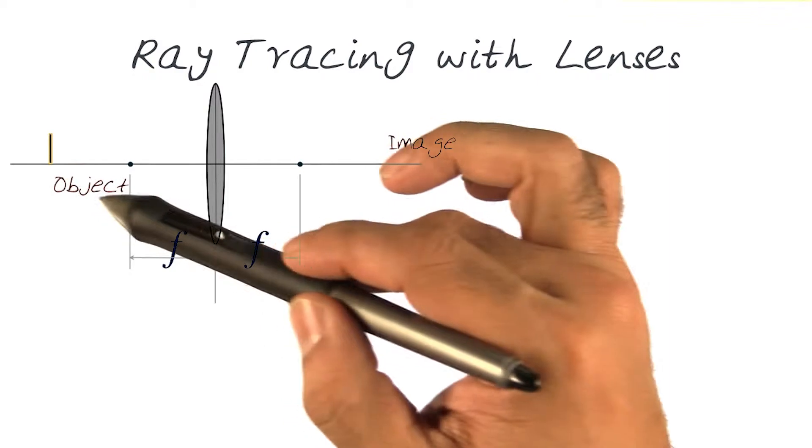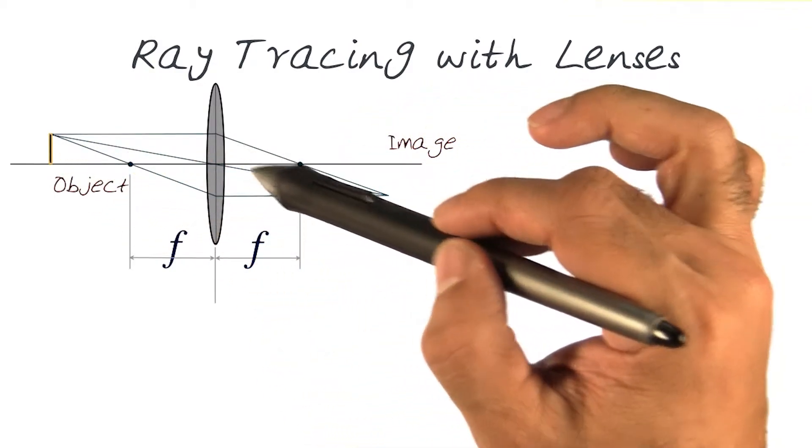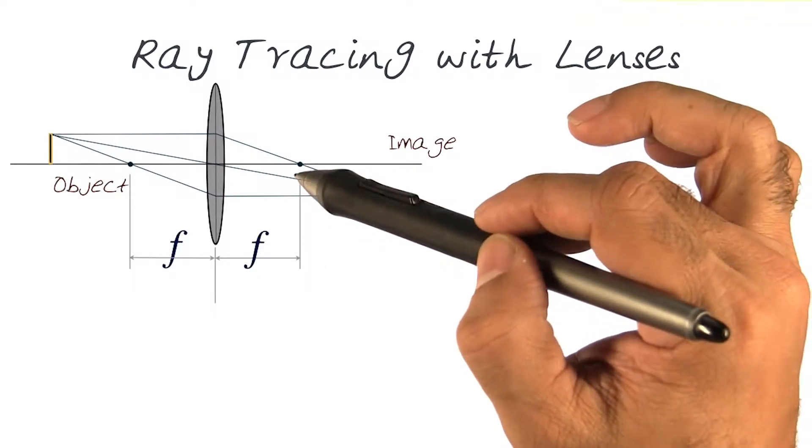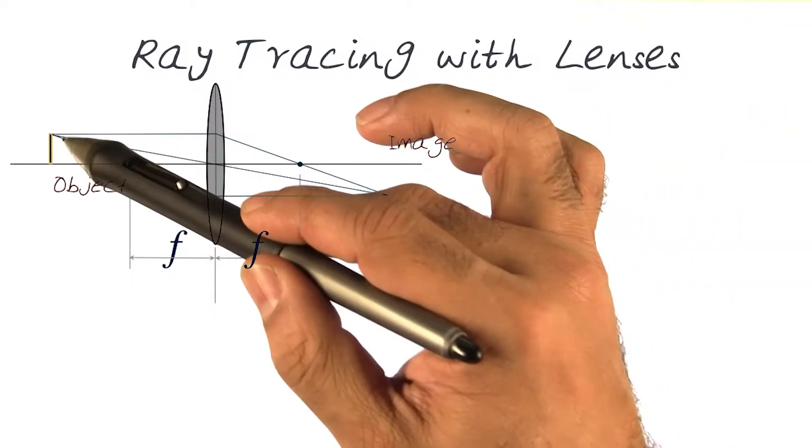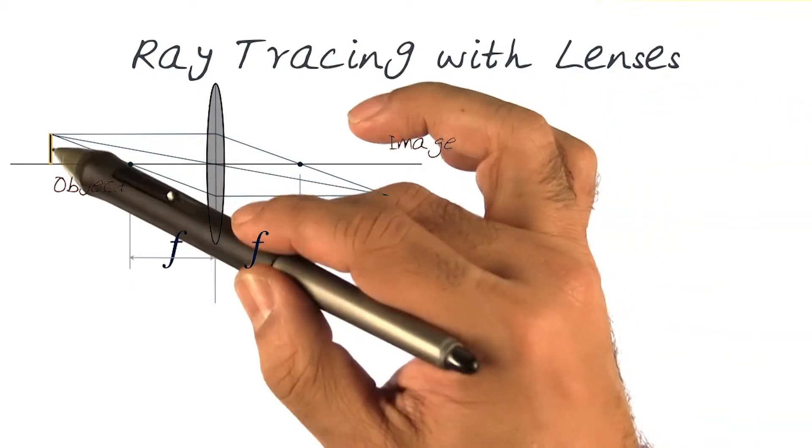So I put an object here, basically remembering what we looked at in the last slide. Any parallel light goes through the focal point here, continues on. Anything that goes through the optical point here goes through unadulterated.